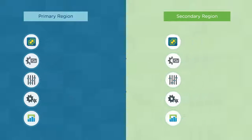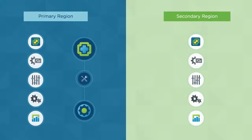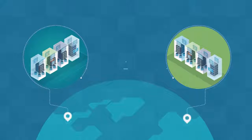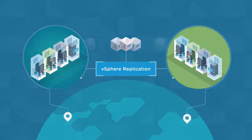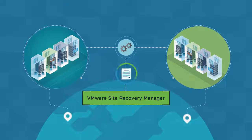In the primary region, the vRealize Operations and vRealize Automation components are deployed and configured to failover to the recovery region. To support failover, vSphere Replication is utilized at both regions to replicate virtual machines between regions. In addition, VMware Site Recovery Manager is also deployed and recovery policies created to automate the failover and recovery of these solutions.